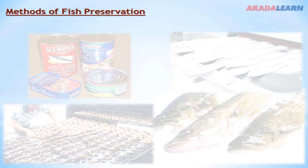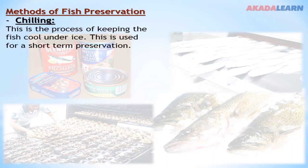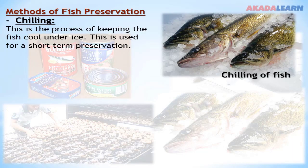Methods of fish preservation: we have chilling, which is the process of keeping the fish cool under ice, used for short-term preservation. The second method is salting, a chemical method of preserving fish by application of common salt all over the body. The action is to stop bacterial growth.